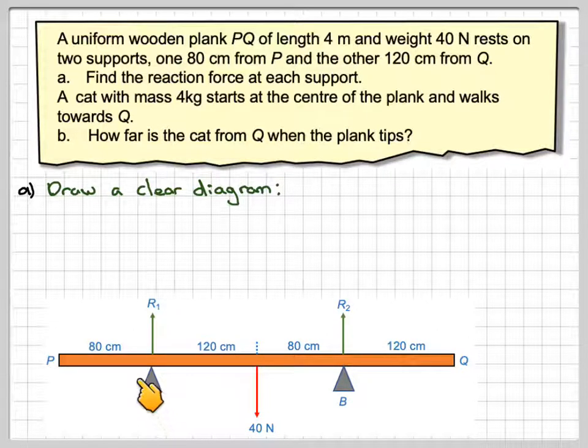We have support A which is going to be 80cm from P and B at 120cm from Q, which means that the weight will act at the centre because it's uniform. So we've got 40N force acting downwards here where this distance is 120 and this distance here is 80. Because we've got a support here, we have a reaction to that support here, we're going to call R1, and a reaction to this support here which we're going to call R2.